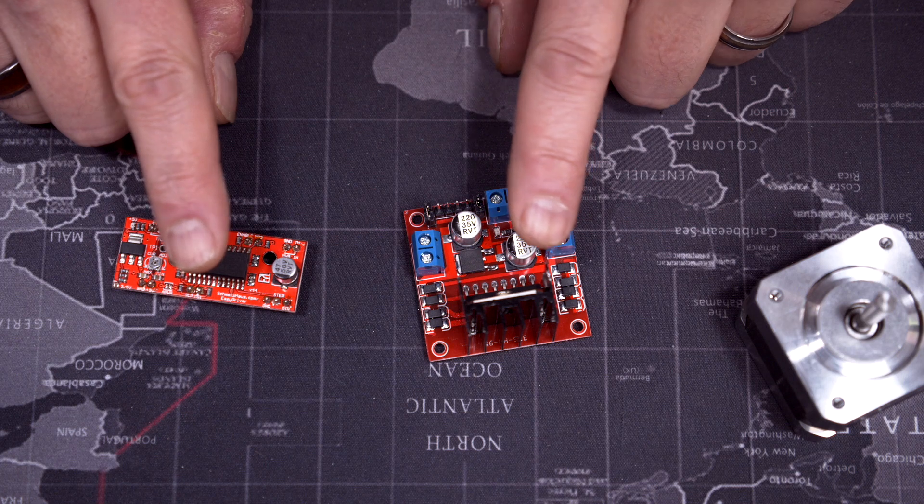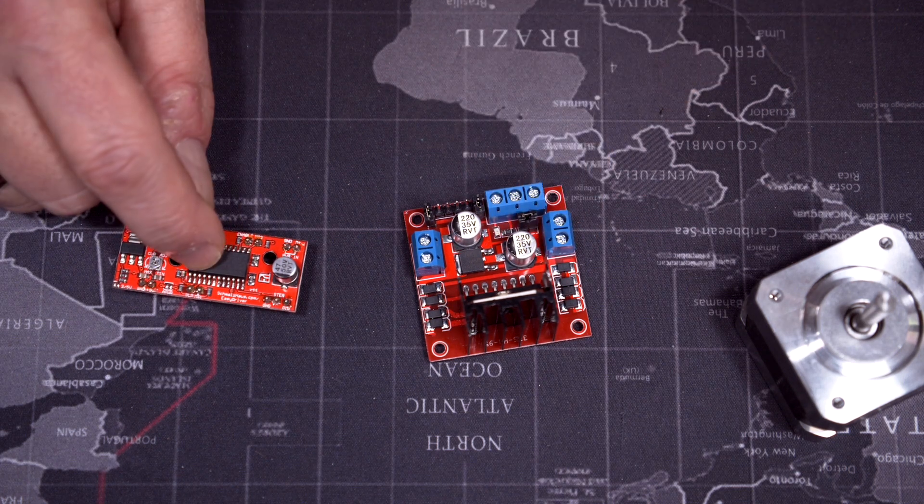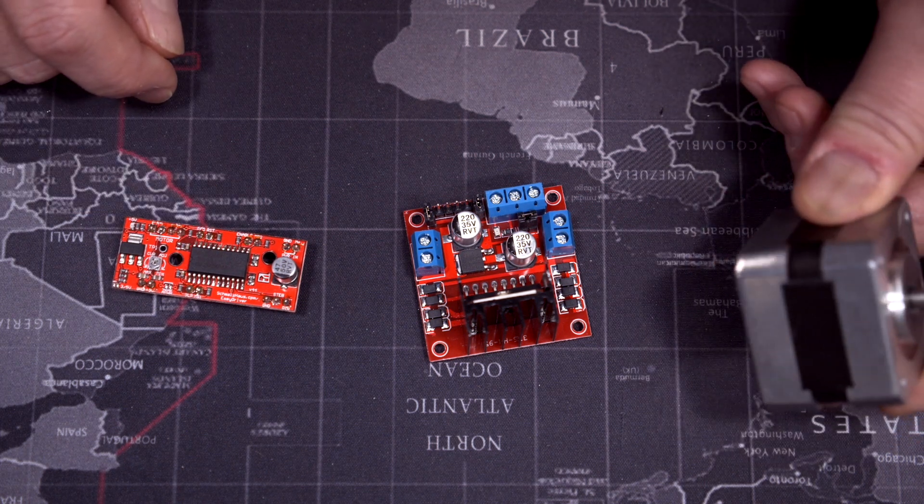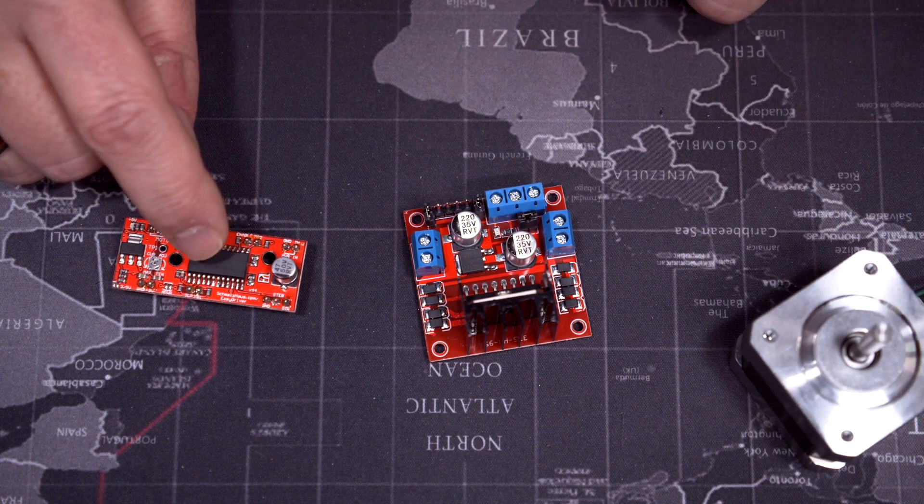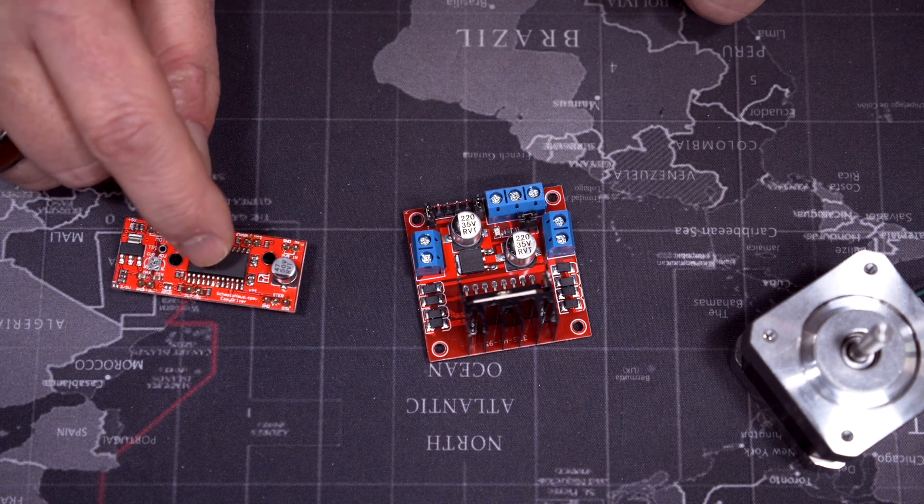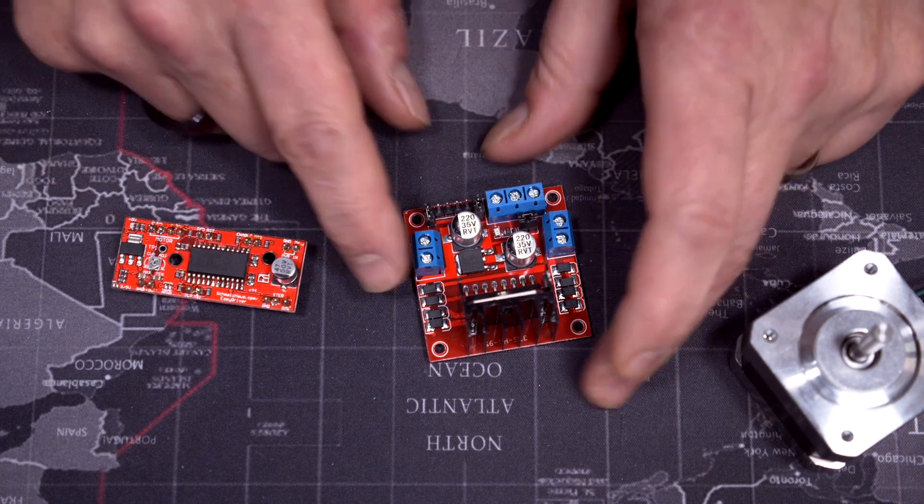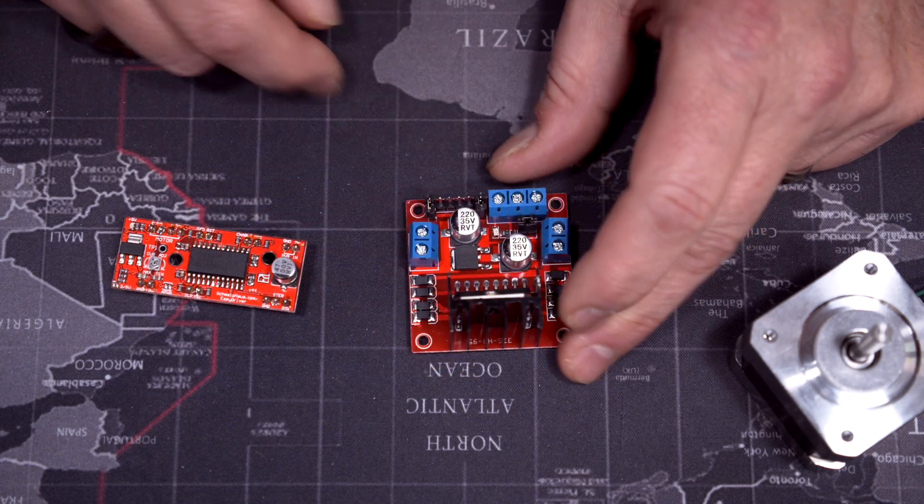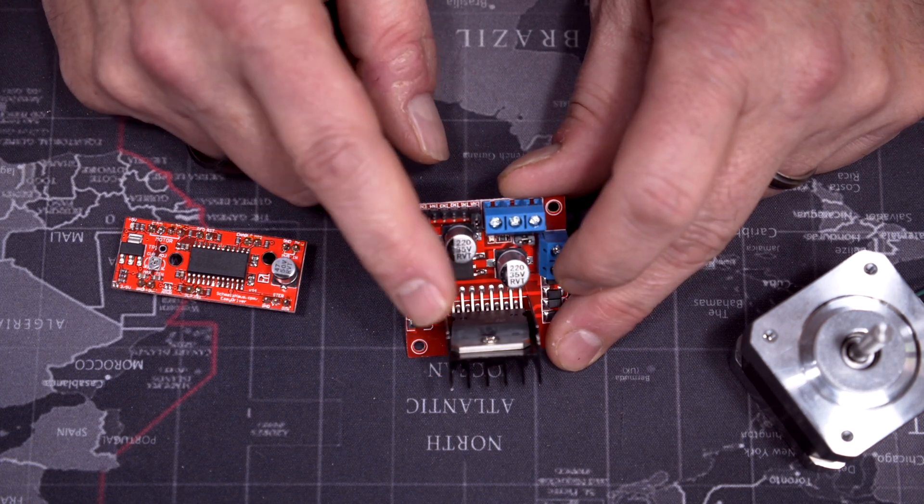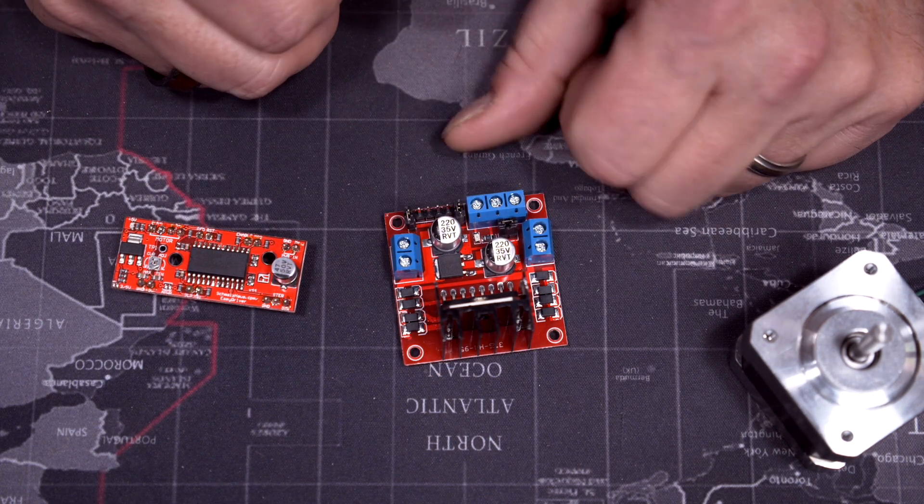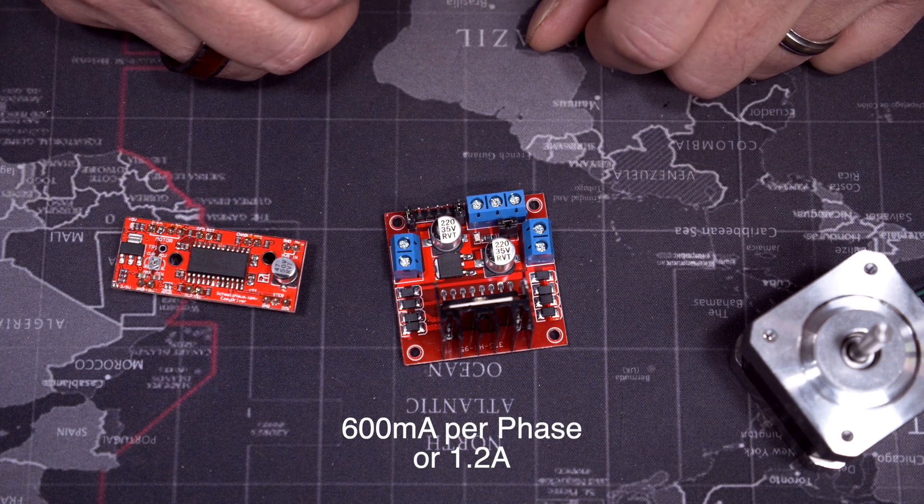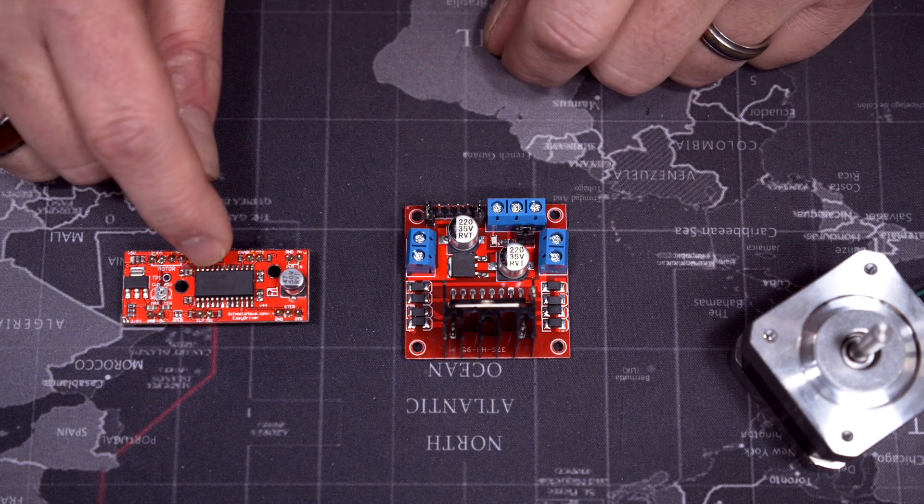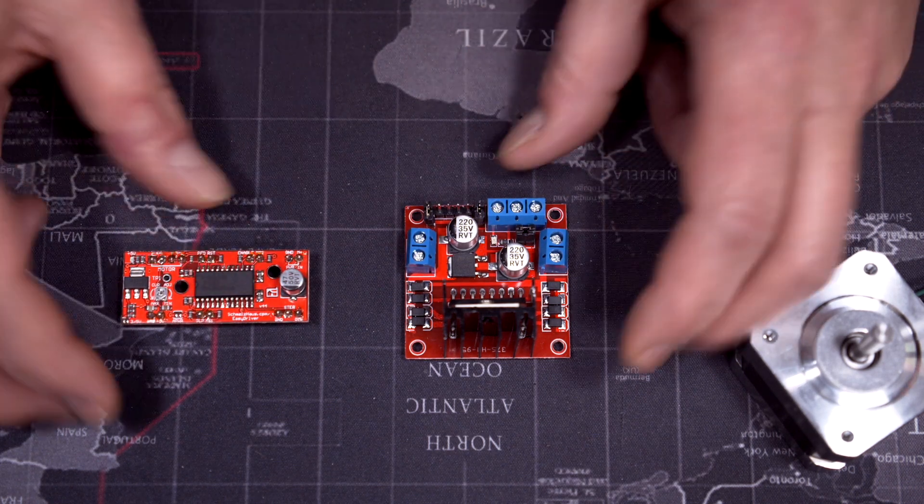Now the other thing too is the ratings for each one of these drivers. This one, if you look at the data sheet, it says up to 750 milliamps per phase. Now this is a two-phase motor, so it can go up to 1.5 amps, although you would need a heat sink on this one. This one, if you look at the data sheet, it says up to 2 amps per phase or 4 amps. You will never get close to that. The chip will actually shut down by overheating when you get to about 600 milliamps or something like that.